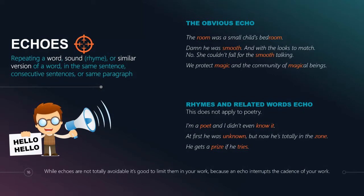Echoes also happen in rhyming — but this is not poetry; poetry does not have the same echo issue, so please don't apply this to poetry. This is just in your narrative fiction. When you say something with a similar sound, that rhyming quality has an echo effect. 'I'm a poet and I didn't even know it' — 'poet' and 'know it' have the same sound. 'At first he was unknown, but now he's totally in the zone' — same sound repeated close together. 'He gets a prize if he tries' — same sound, very noticeable. The more you do this, the more it feels like you're being repetitive, and that makes your writing feel less polished.